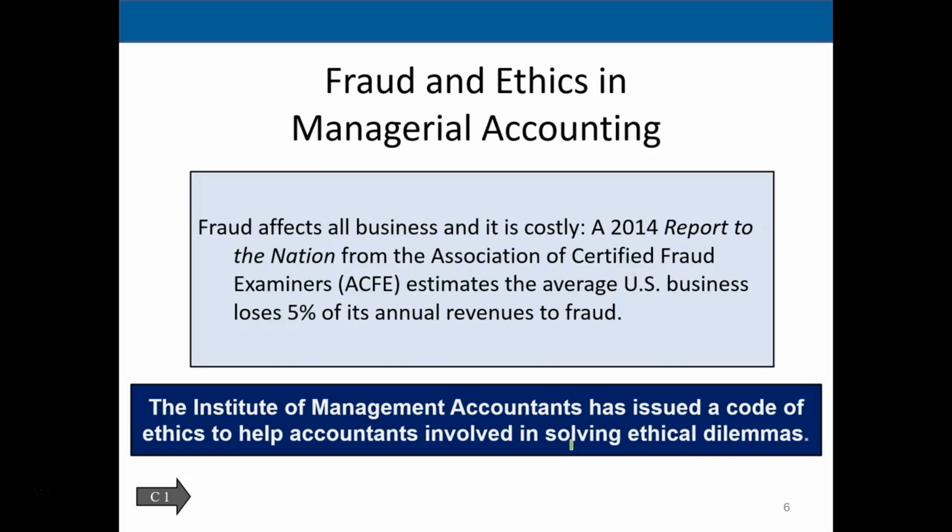As companies grow, we need to implement more internal controls to safeguard against fraud. Management needs to be aware of fraud because it affects the bottom line. Fraud is essentially someone deceiving the company for personal benefit — such as stealing or manipulating information to get a bonus. The goal is to implement internal controls, mitigate and catch fraud as early as possible, and in so doing, increase revenues and maintain a healthier business.